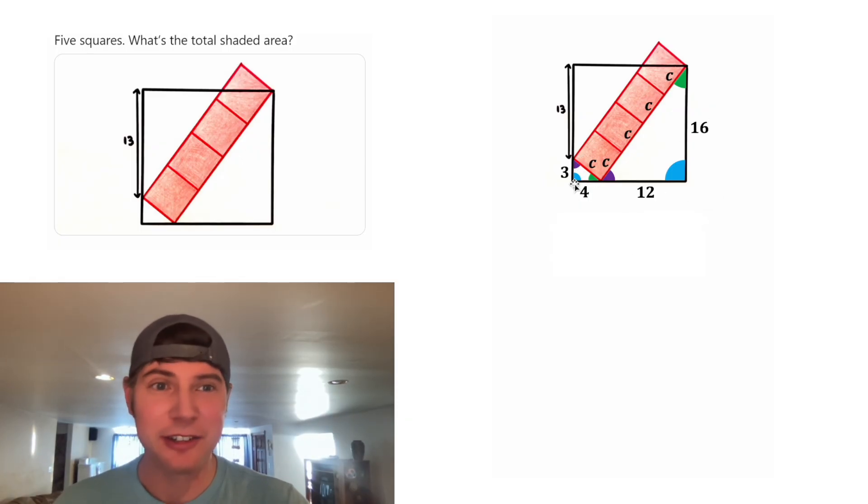So now let's focus on this little triangle right here. This is a special triangle. It's called a Pythagorean triple. Anytime a right triangle has legs three and four, the hypotenuse will always be five. And since this side is five, that means this side is also five.